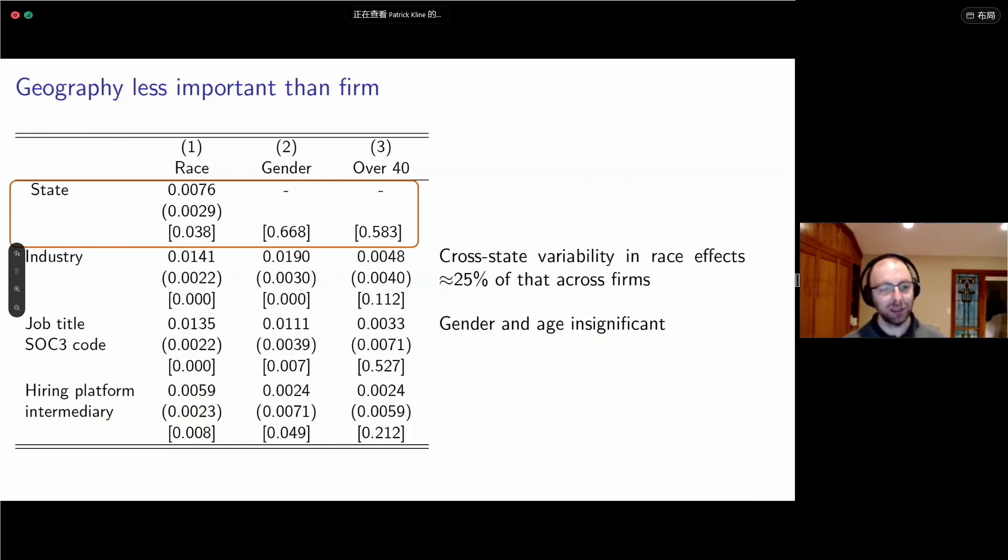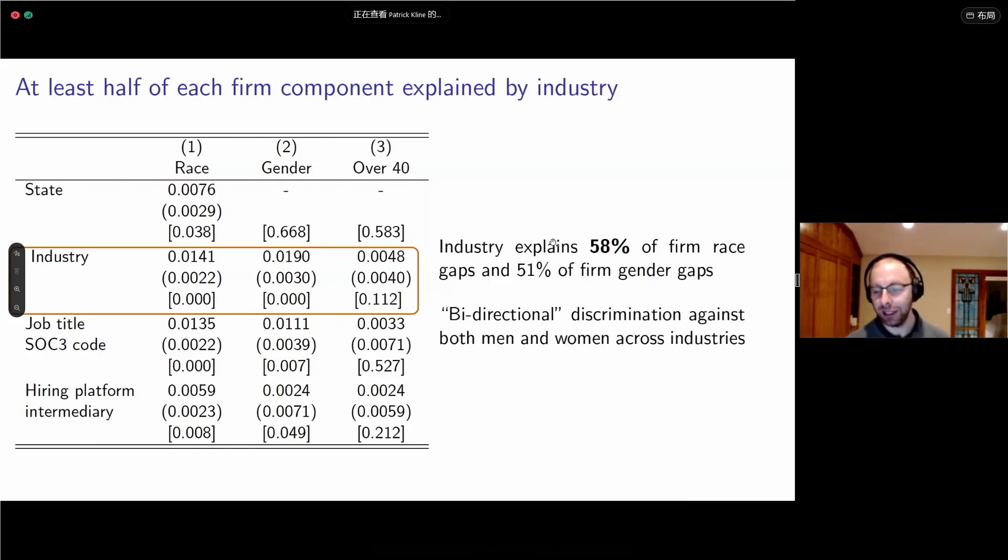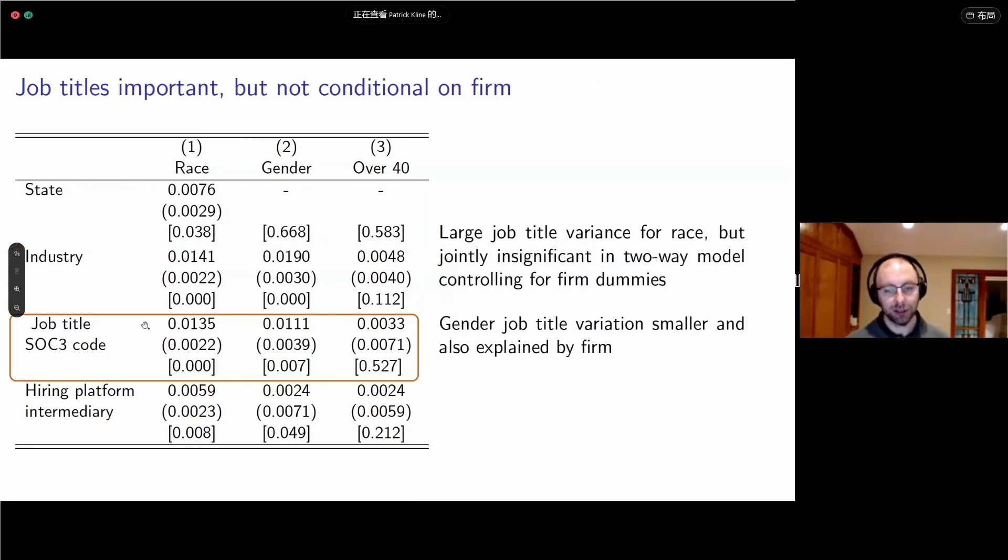How does firm compare to other groupings of jobs? Let's start with geography. Surprisingly, for race, we find a very small or relatively small variance component across states. It explains only about 25 percent of the variance that firm groupings explain. For gender and age, we find wrong-signed variance components, so we can't reject that those are zero. Industry turns out to be important. Industry explains about half of the variance across firms for both race and gender. We must be finding discrimination in both directions.